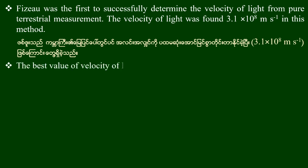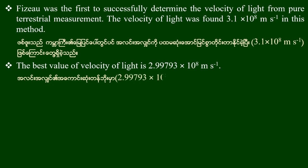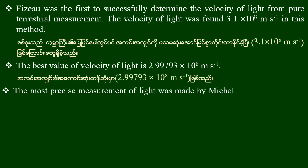The best value of the velocity of light is 2.99793 times 10 to the power 8 meters per second. The most precise measurement of the speed of light was made by Michelson.